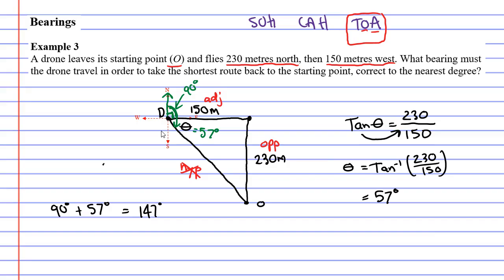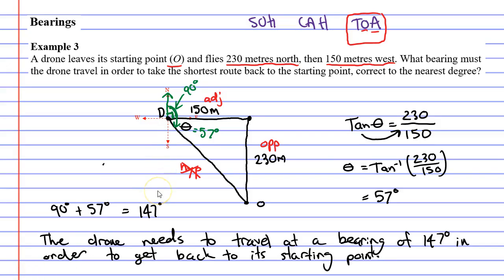So the drone needs to travel at a bearing of 147 degrees to get home. In fact we'll write that sentence down to finish off. Anyway, that concludes our video on example 3. Remember to read the description below for links to workbooks that relate to this video.